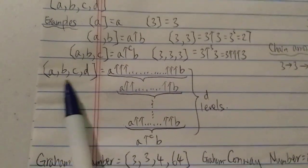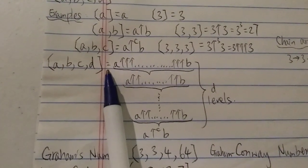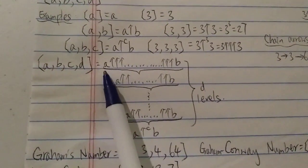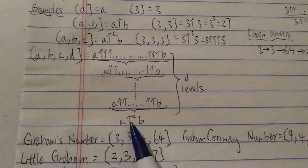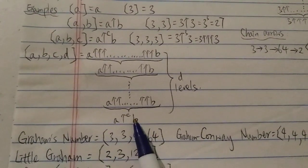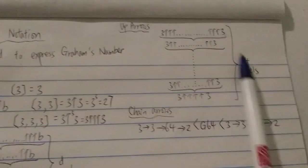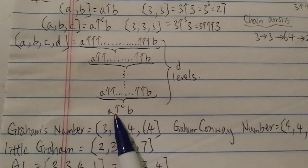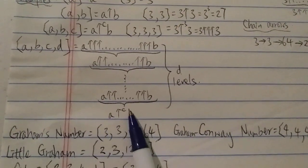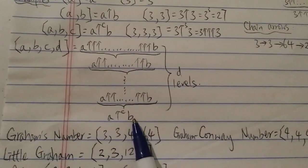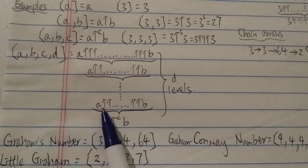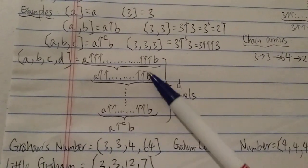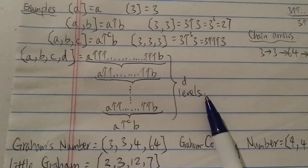And lastly, with four terms, [A, B, C, D] in a bracket, you start at the bottom: A with C up arrows B. Then the next level would be A with this number of arrows B. And then you continue this process for D number of levels.